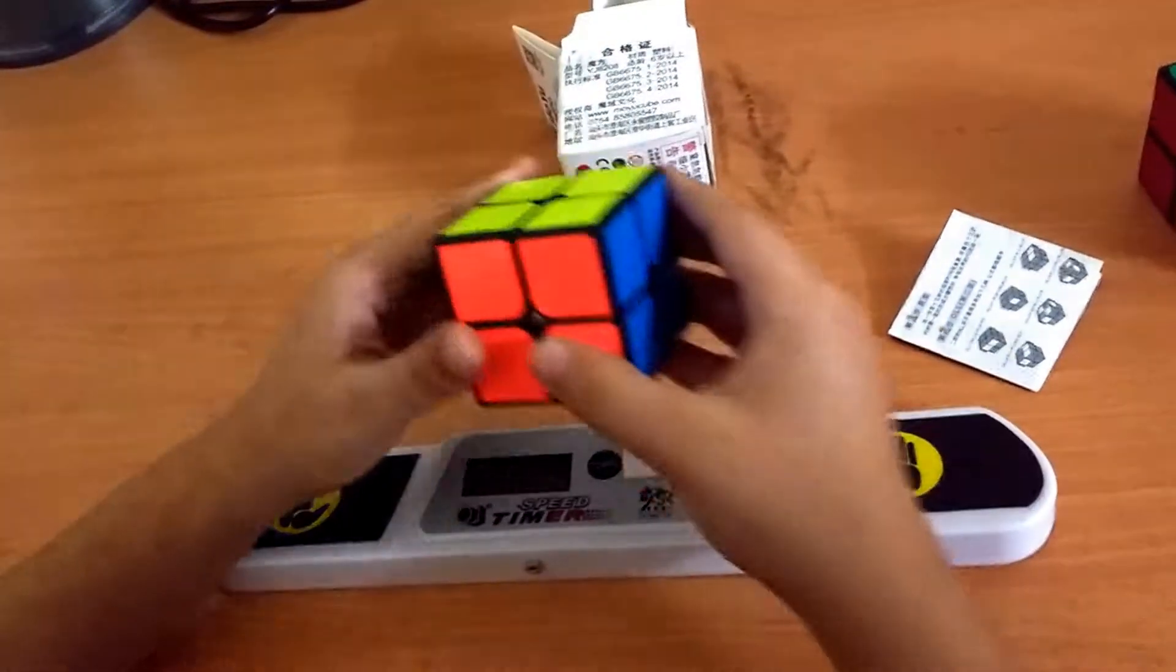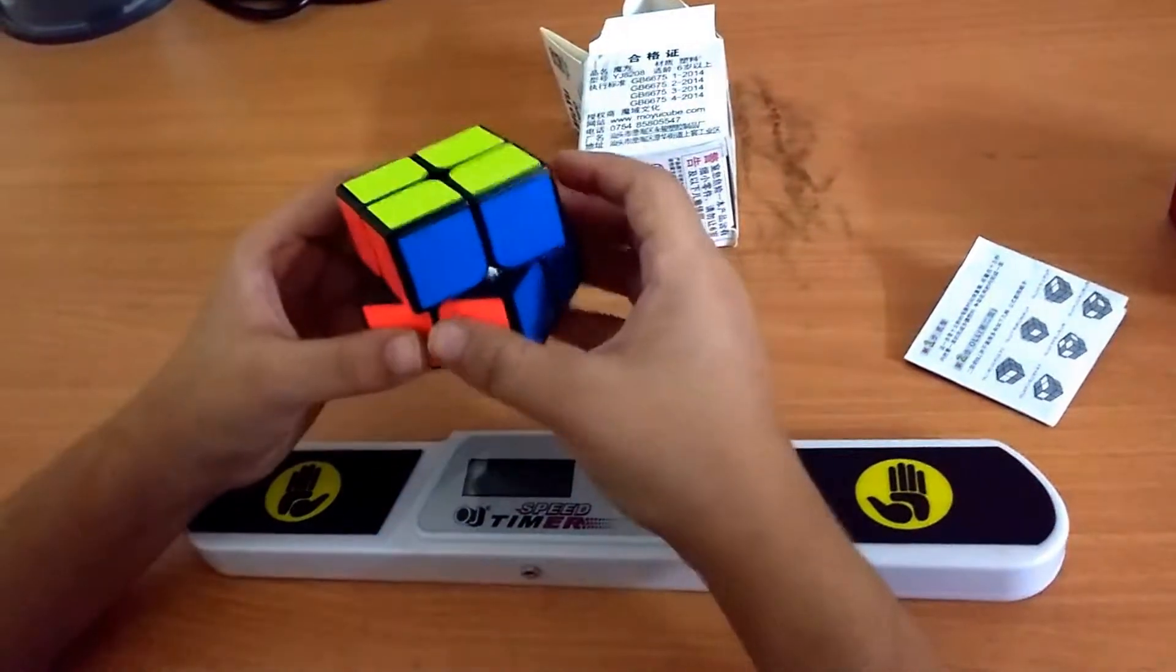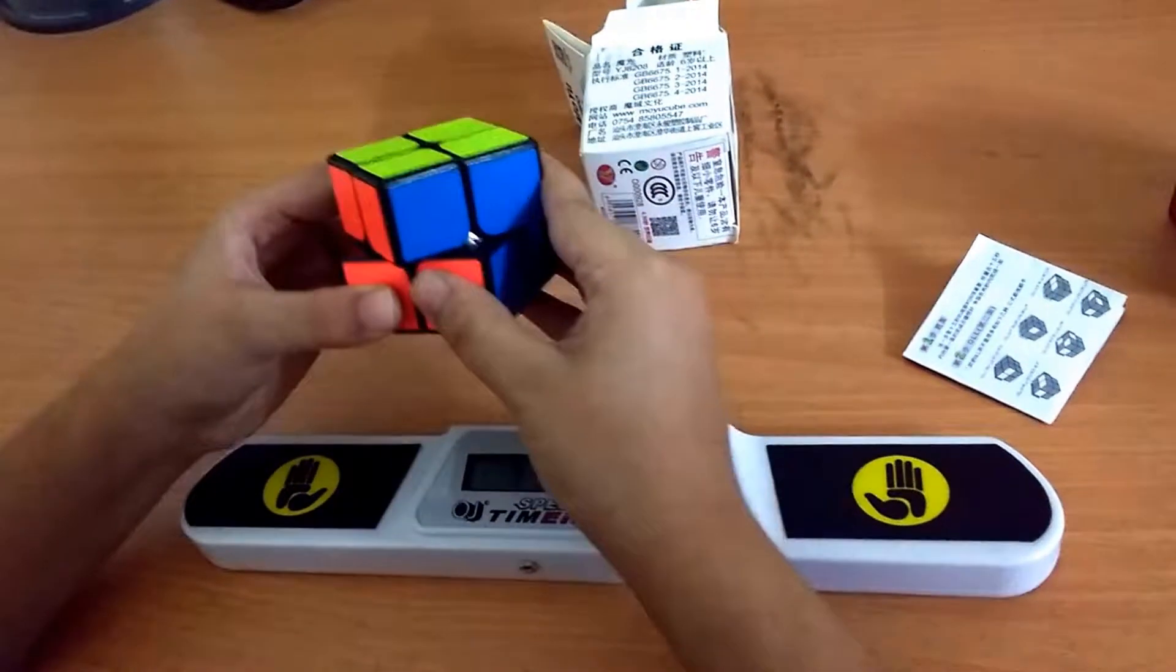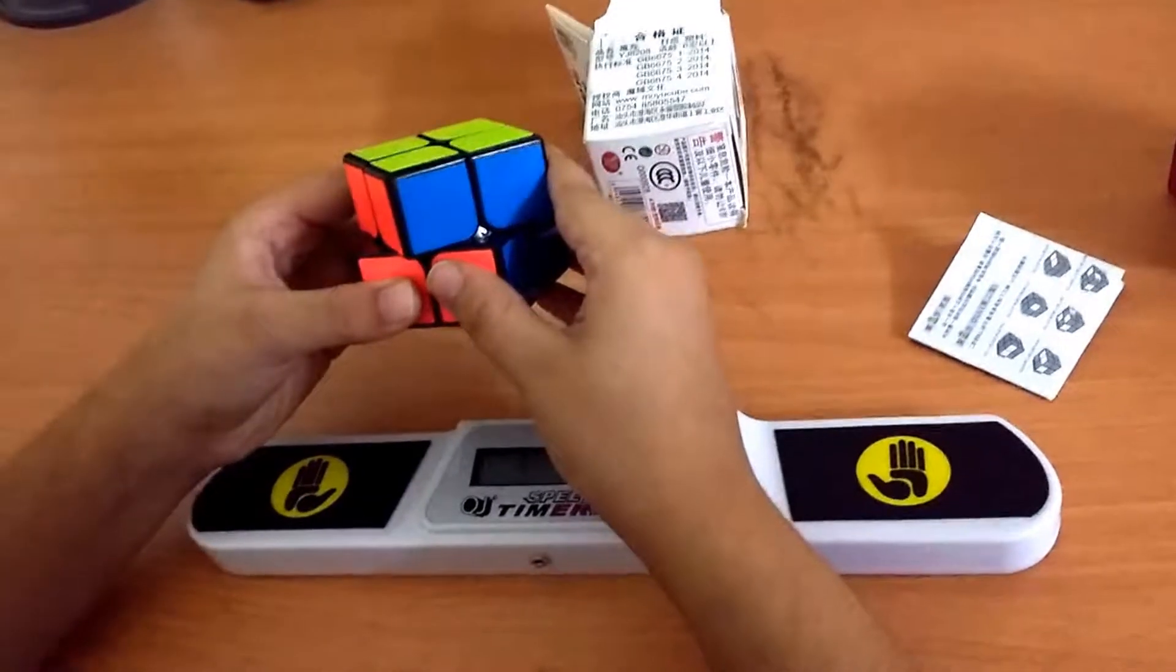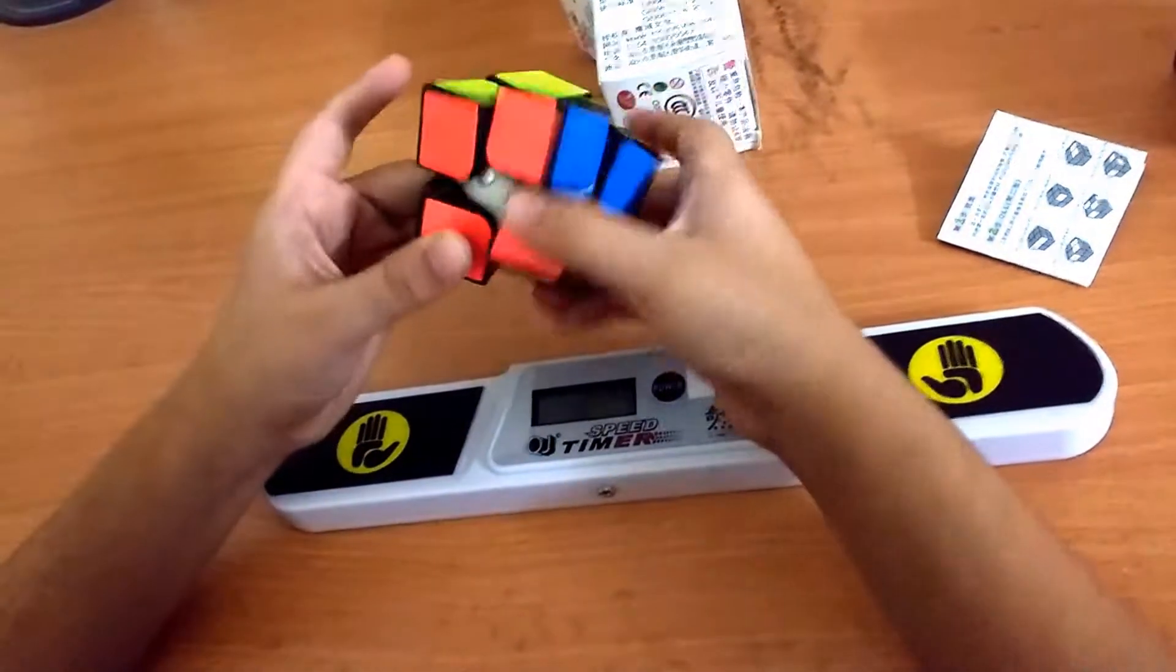Now corner cutting on this cube is actually exceptional for a 2x2. It corner cuts 45 degrees easily and even a little more than 45 degrees sometimes, but a little more than 45 degrees is quite unpredictable.